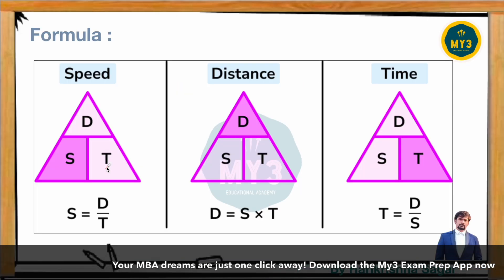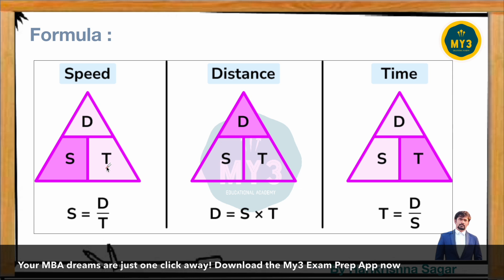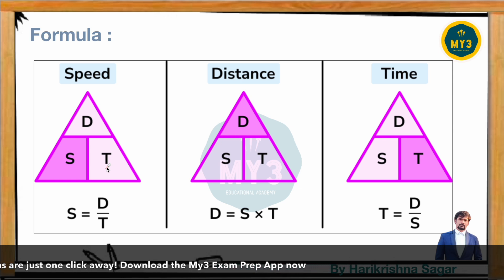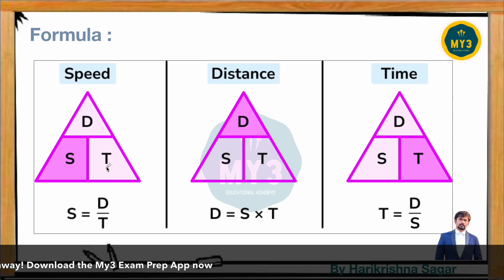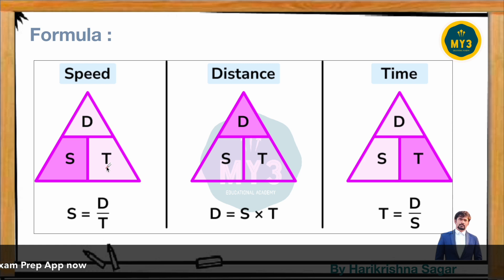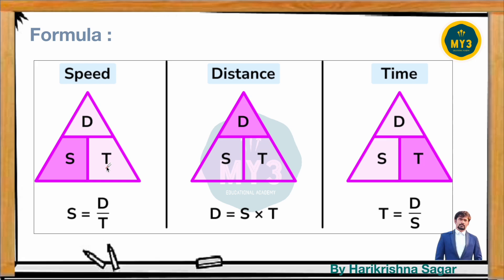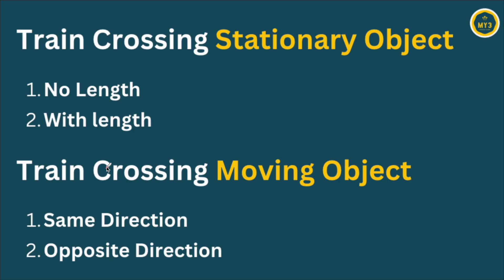In order to solve the questions, you must remember the basic formulas of speed, distance, and time. Speed is defined as distance traveled divided by time taken. Distance is equal to speed into time. Time is equal to distance by speed. Use these formulas while figuring out the required value.